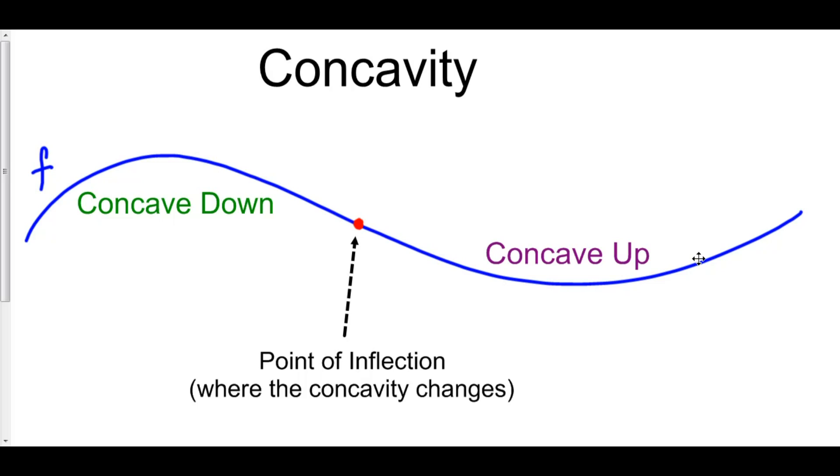Now, what determines concavity? The answer is the second derivative. The fact is that if the second derivative, f double prime, is negative, then our function is concave down.